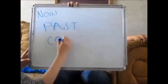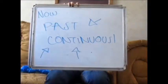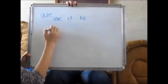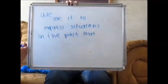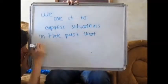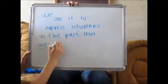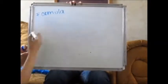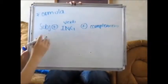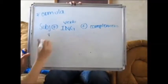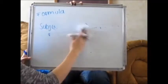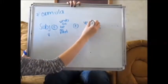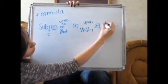Now, past continuous. We use it to express situations in the past that weren't finished so fast. The formula is: subject plus verb to be in past plus verb plus -ing plus complement.